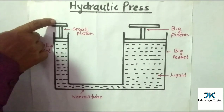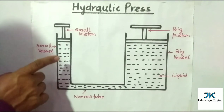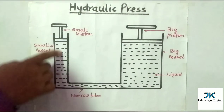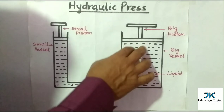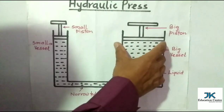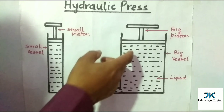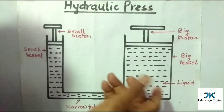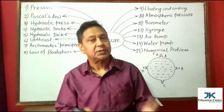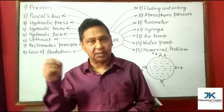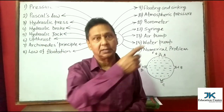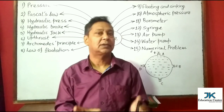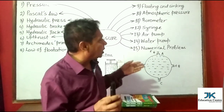When a force is applied on the small piston, it exerts pressure on the liquid. Since the liquid is confined, according to Pascal's law the same pressure transmits to the big piston. The area of the big piston is comparatively very large, so the force magnifies to a very large value. Both pistons have equal pressure but the force magnifies. Its uses: it is used to raise heavy loads and to make cotton bundles.